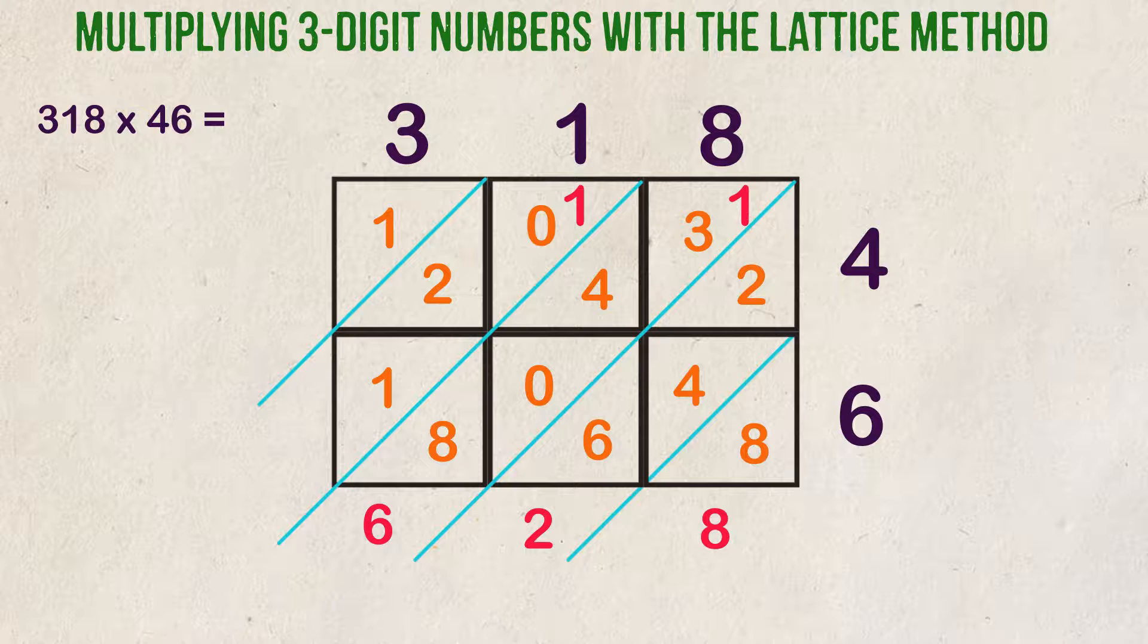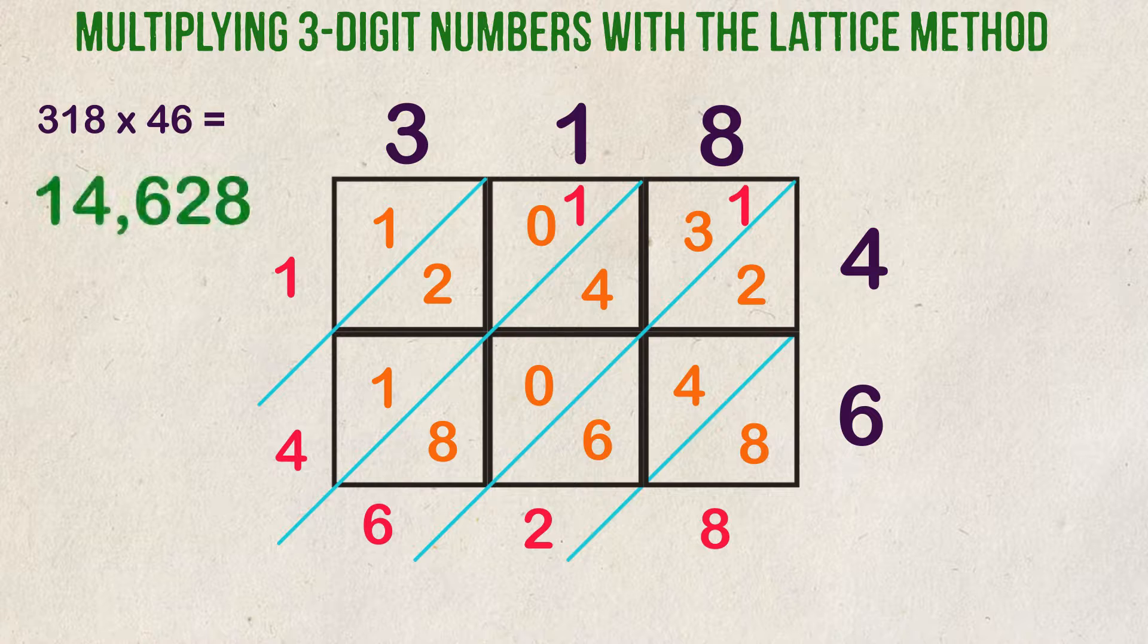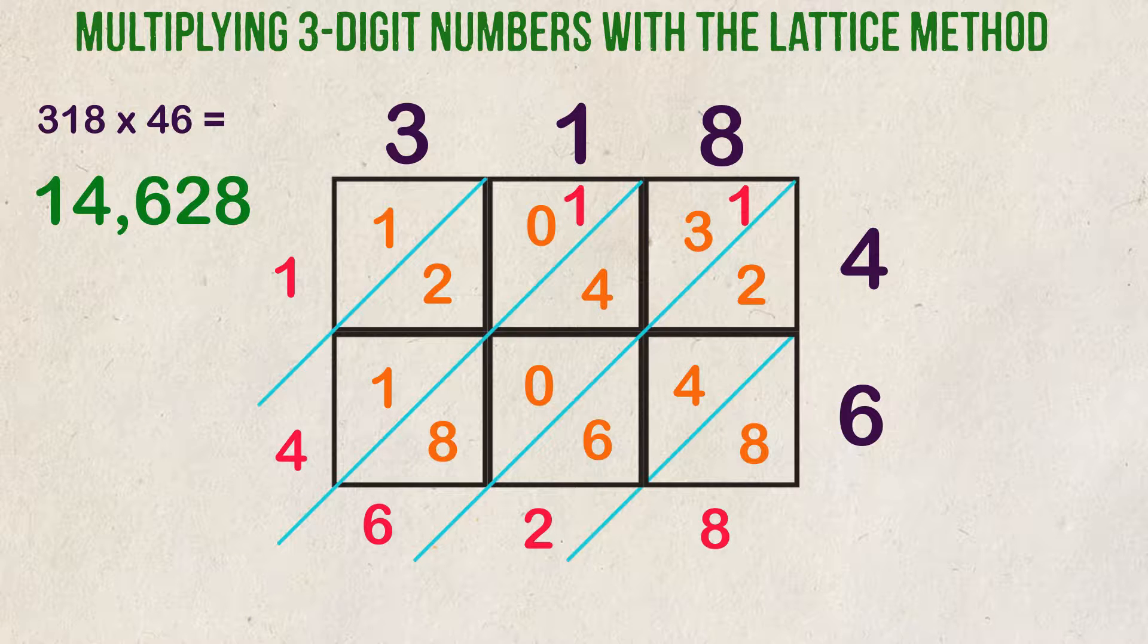One plus two plus one is four. Our final section is just the number one. Our answer is all the numbers on the outside of the box, so 318 times 46 is equal to 14,628.